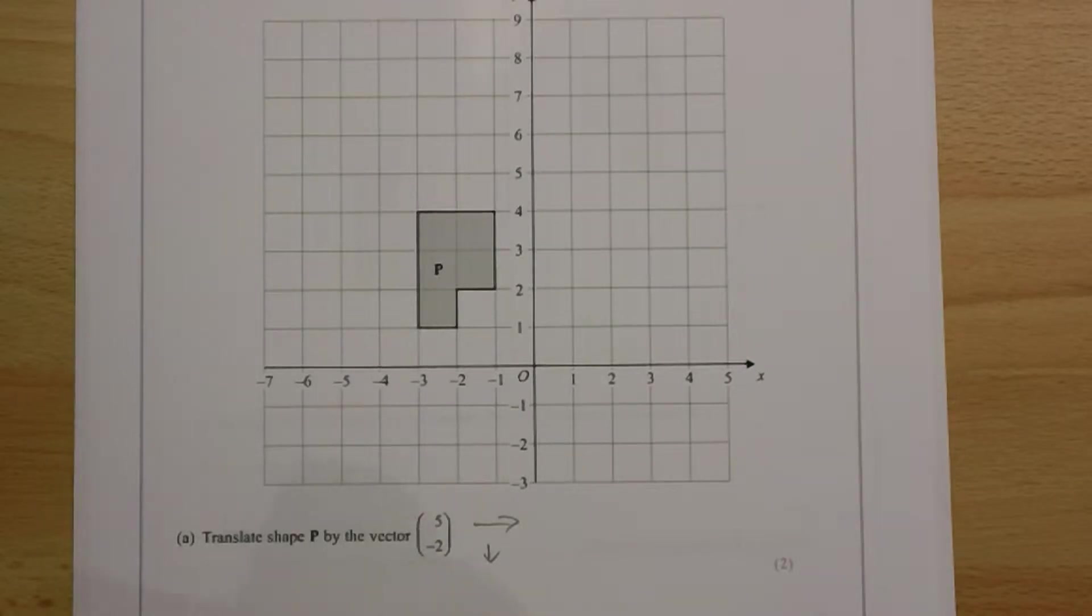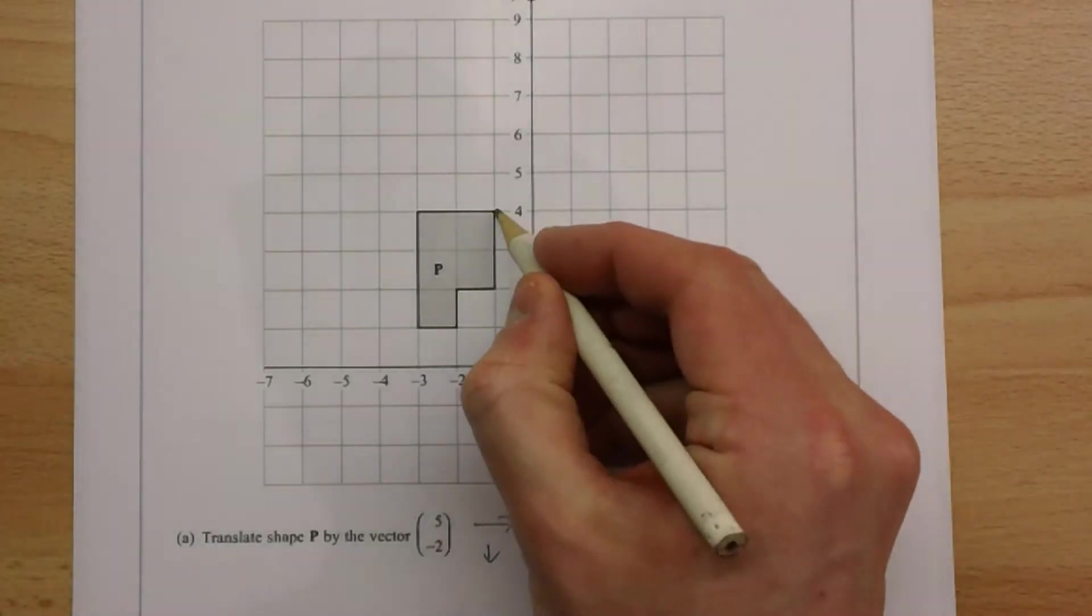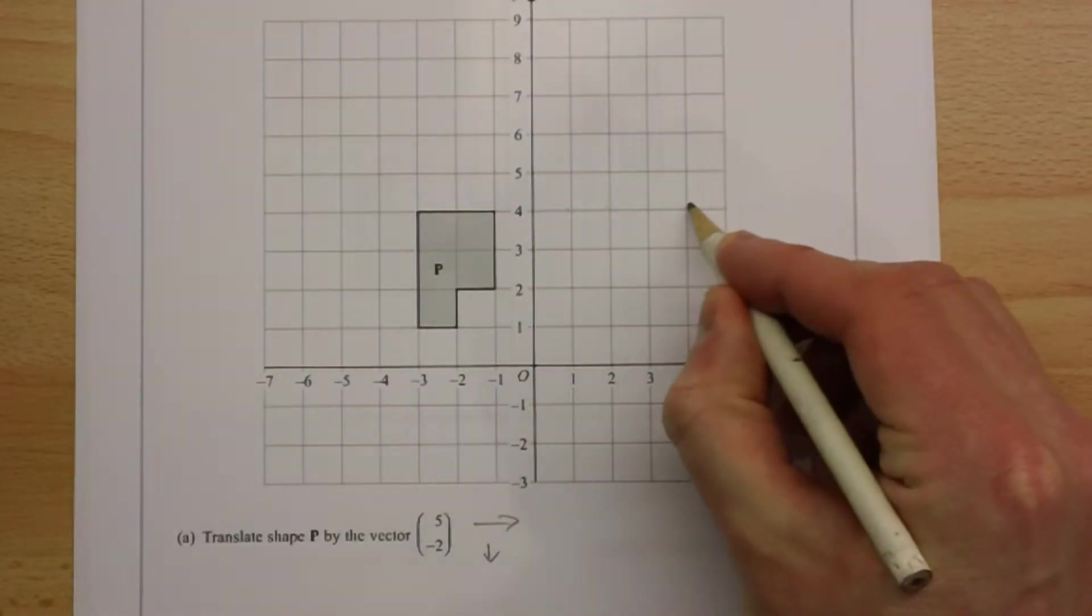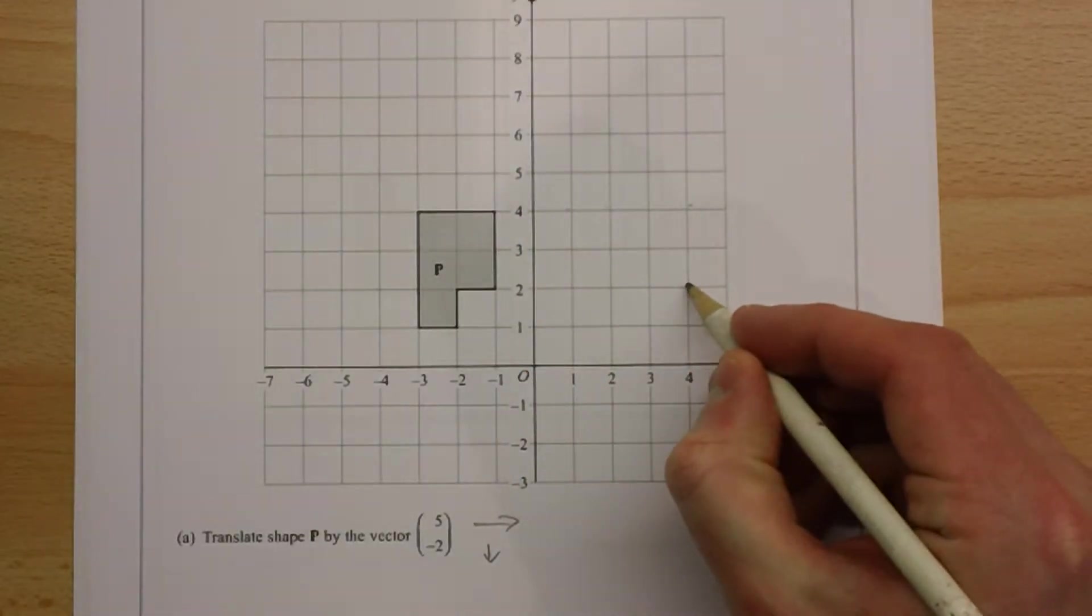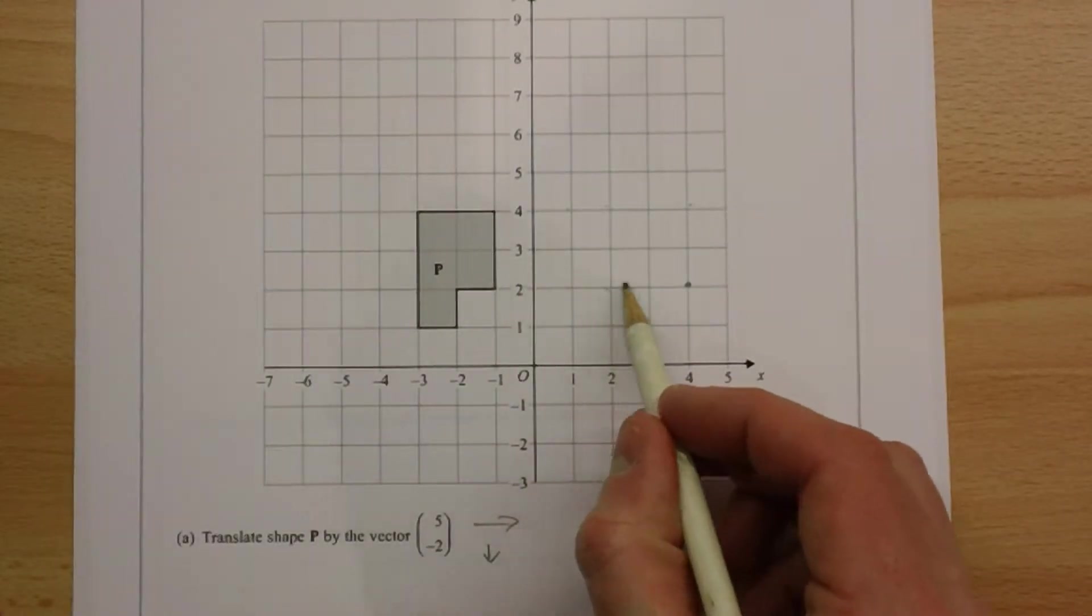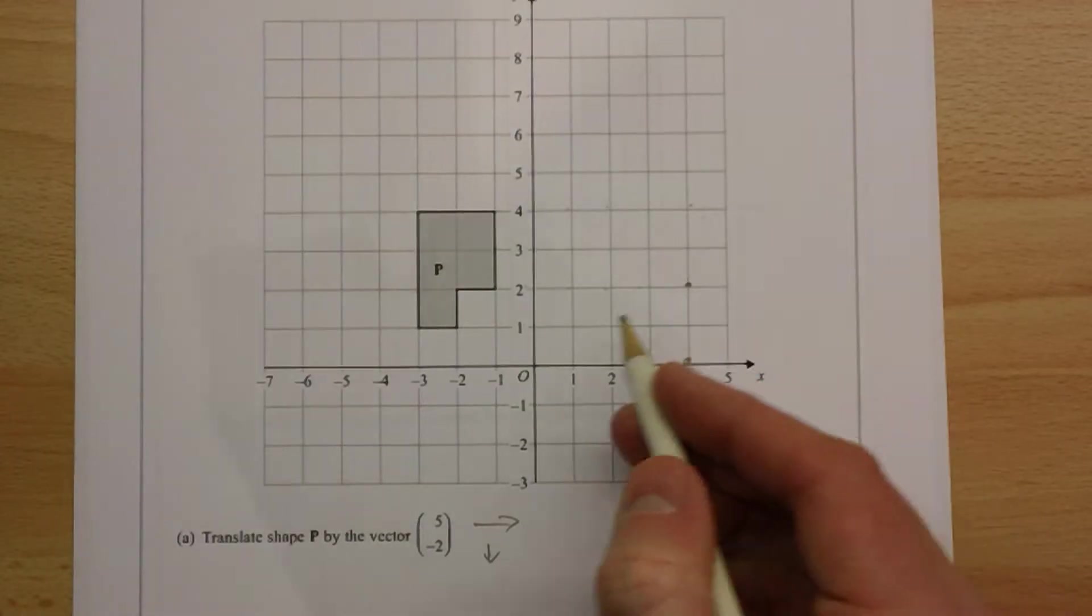The way to do that is to pick a point, any point, and to move that point one, two, three, four, five to the right, and two down. And to mark it, and then to do the same thing with another point. One, two, three, four, five, and two down.